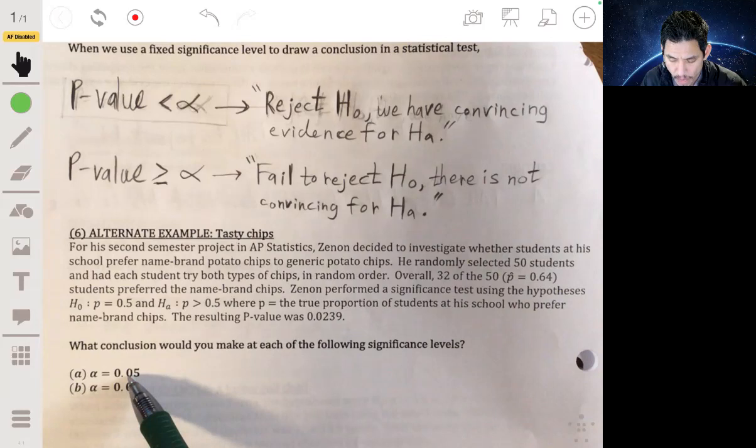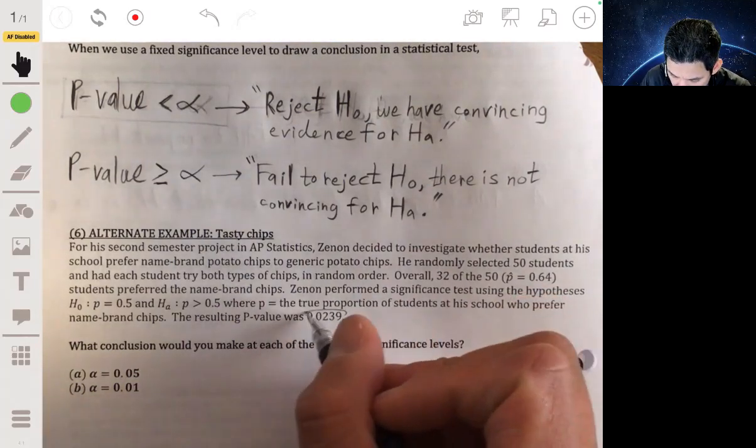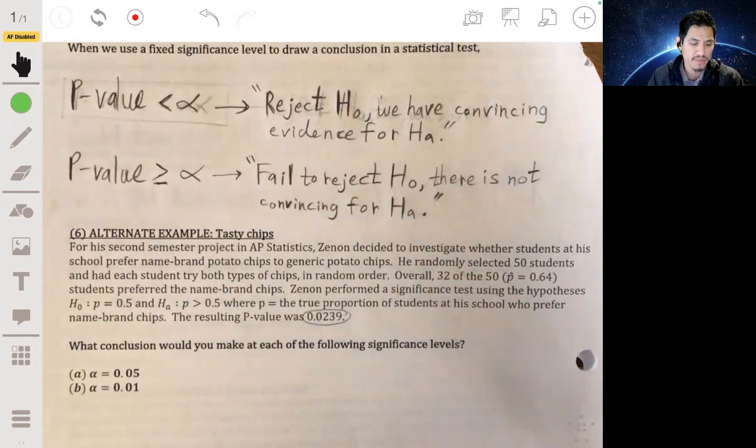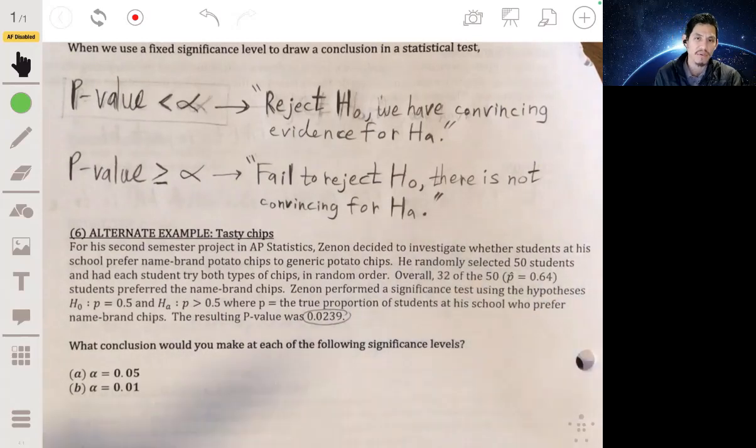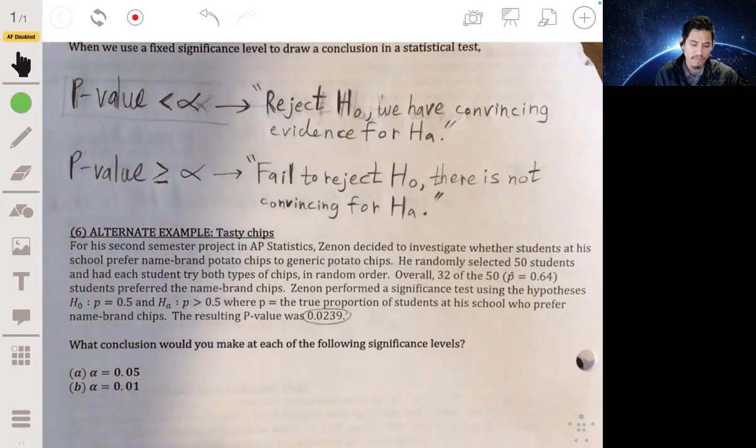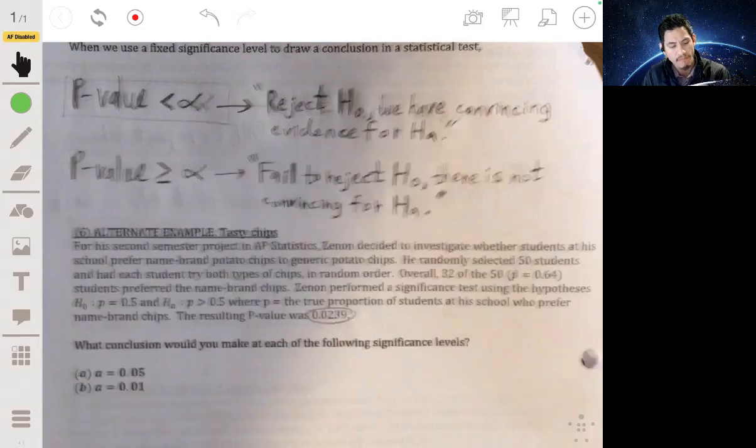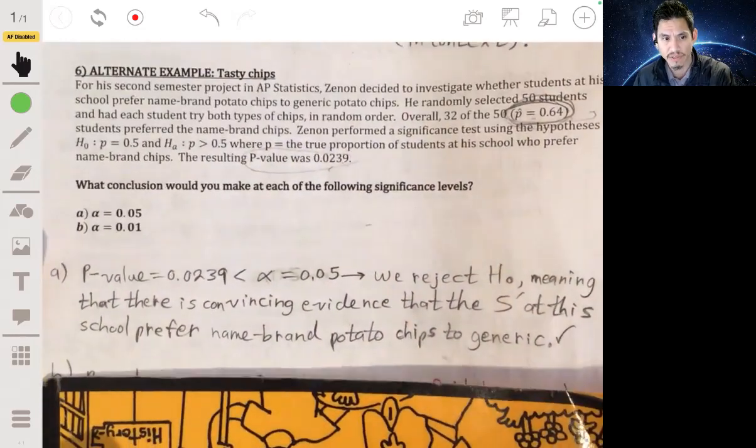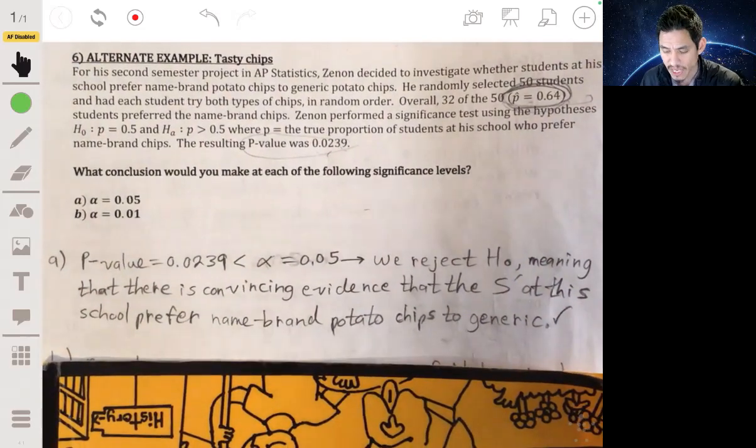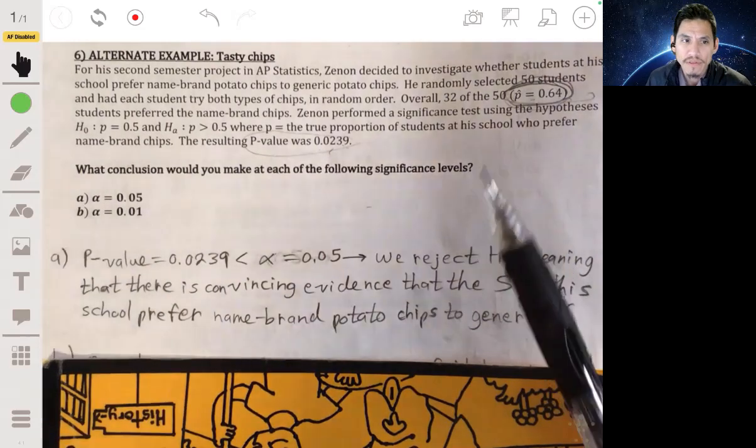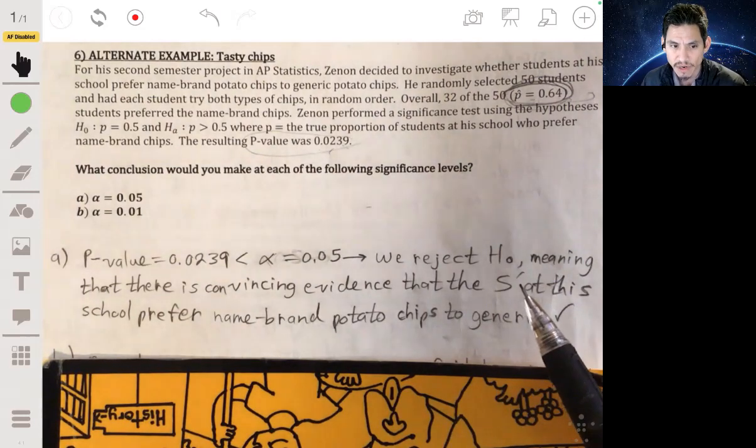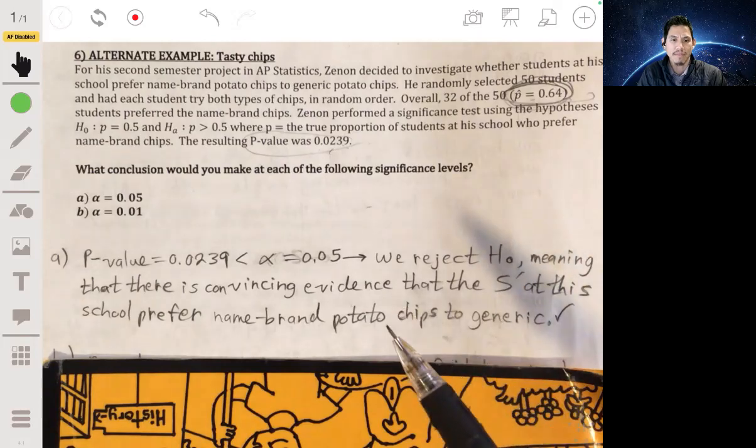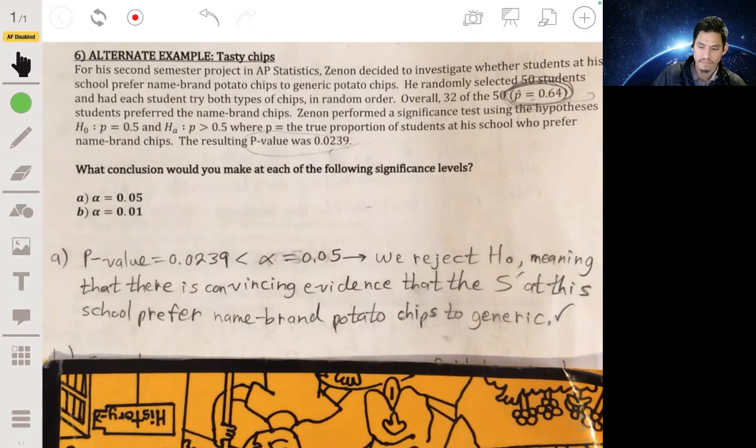So if our alpha is 0.05, and our p-value is 0.0239, then our p-value is less than our alpha. So we're going to reject H₀. We reject null hypothesis. But what does that mean in context? What does that mean in the problem? We reject null hypothesis, and we have convincing evidence for the alternative. So think for a second. So what does that mean? Here's convincing evidence that... Remember that the null hypothesis is that there is no preference. The alternative is that there is a preference. So if we're rejecting the null hypothesis, we're basically saying that we don't believe that there is no preference. In other words, we do believe that there is a preference. So we are going to basically say we have strong enough or convincing enough evidence to say that students at the school prefer name brand potato chips compared to the generic.